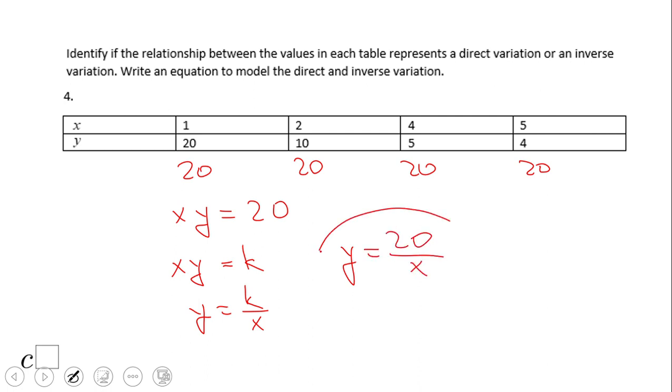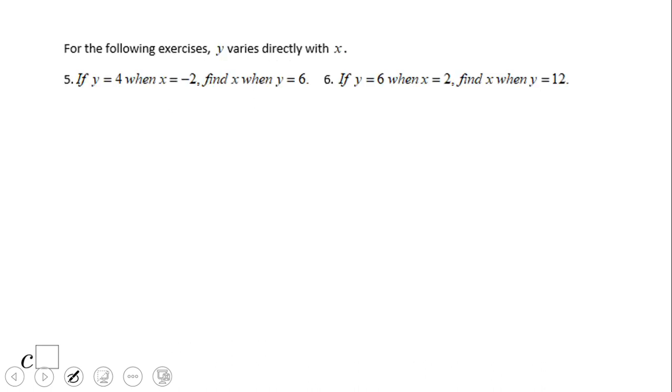So if you end up with inverse variation, you'll correct. This is inverse variation because if you multiply again: one times twenty, two times ten. Twenty. And this is the relation that will model this situation.